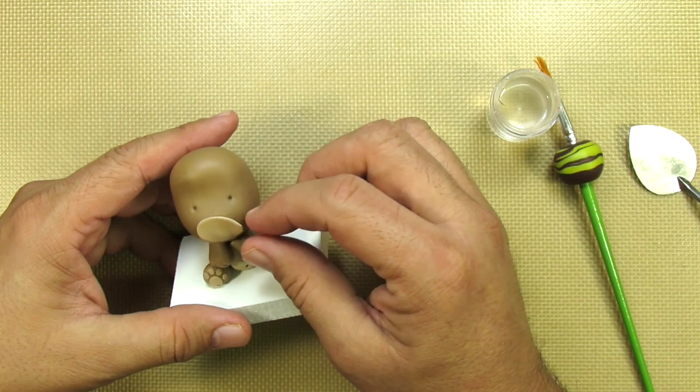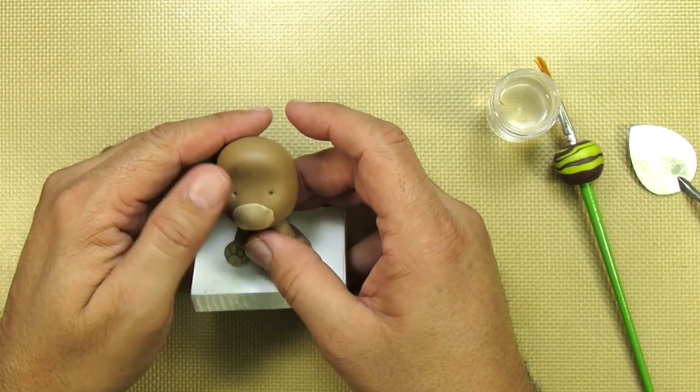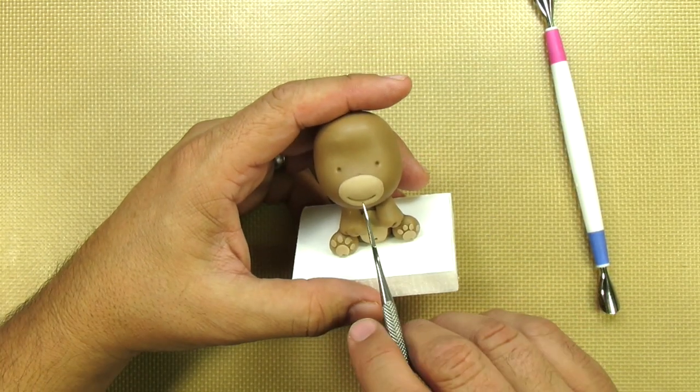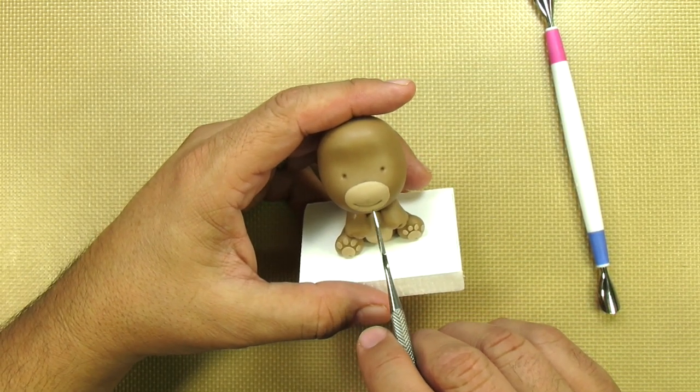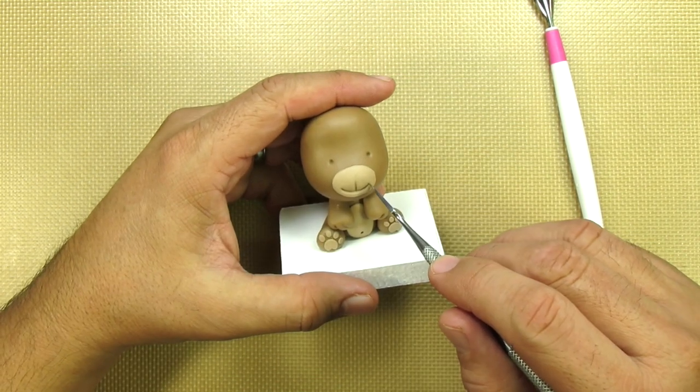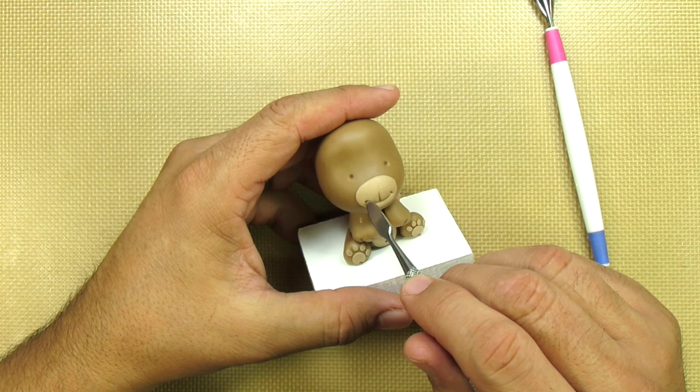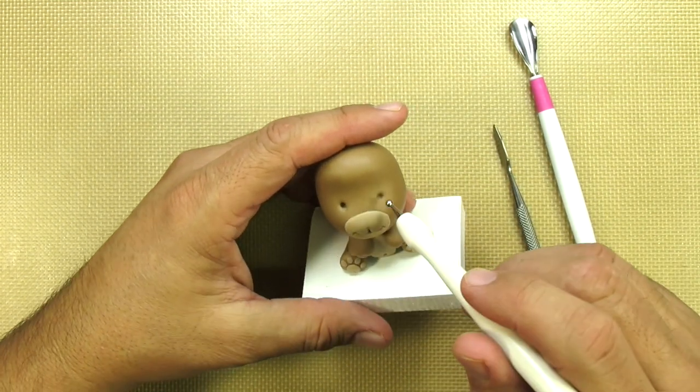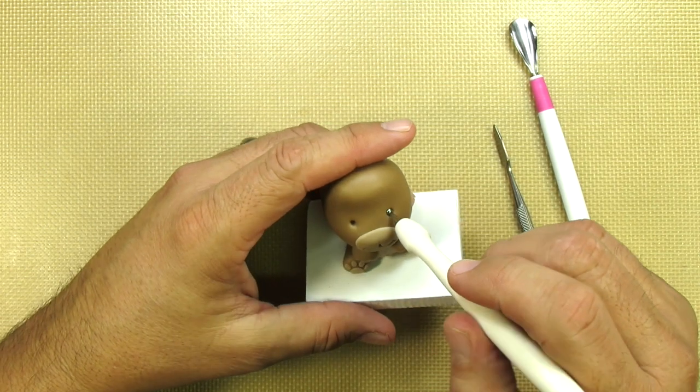After we add this and make sure it's nice and flush, we're going to use the larger end of the smiley tool. This is from Wilton, and just press in to make a cute little smile. Then we're using one of our favorite stray tools just to make these little tiny dimples and indentations in the muzzle. There you go.